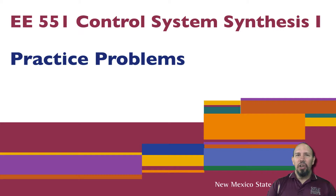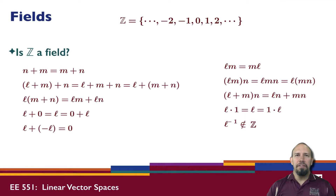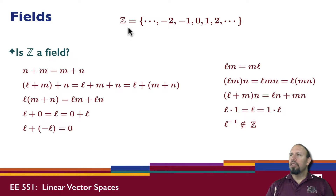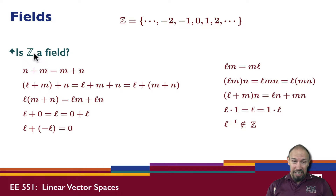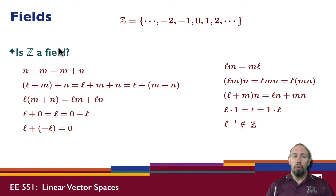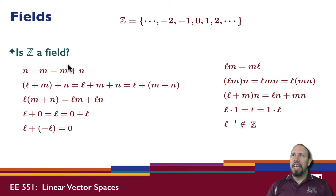Let's take a look at some practice problems. First we're going to look at fields. Here's an example: Z is the set of integers, so it goes from minus infinity to infinity. The question is: is Z a field? We go through and look at all the properties of fields to see if that's the case.